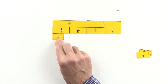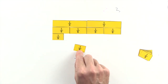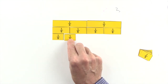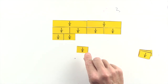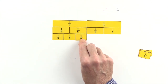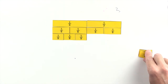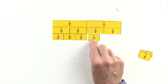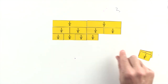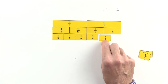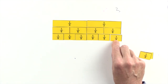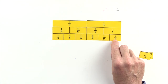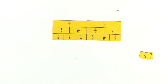5 ninths are less than 2 thirds, and 6 ninths are equal to 2 thirds. So 6 ninths and 2 thirds are equivalent fractions.